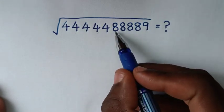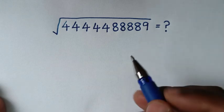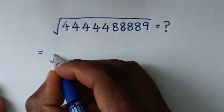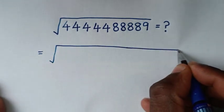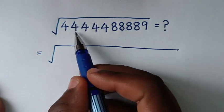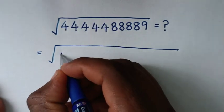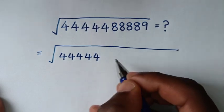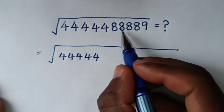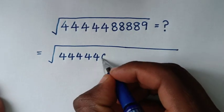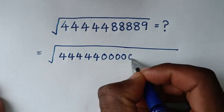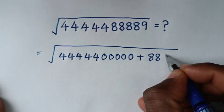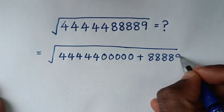The number 444448889 can be written as: we have five 4s, then five 0s, then four 8s, then 9. So it will be equal to the square root of 44444 then 00000 then 8889.